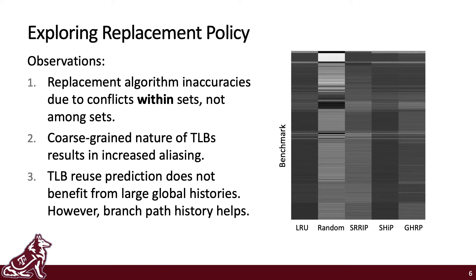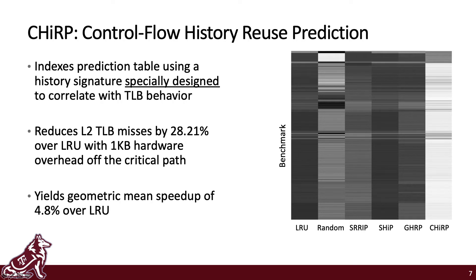A good TLB replacement policy needs to be more selective in when to update its prediction counters so as to avoid oversaturation. Third, while previous work has shown that longer PC histories benefit predictive replacement policies in the L-cache and i-cache, this is not the case in the TLB. Branch path history does seem to help, though. This is likely due to the fact that L2 TLB accesses come from both data and instructions in the first-level TLBs. Conditional branch histories in particular can reflect data accesses when the global path history may not. These observations lead us to proposing CHIRP — Control Flow History Reuse Prediction.